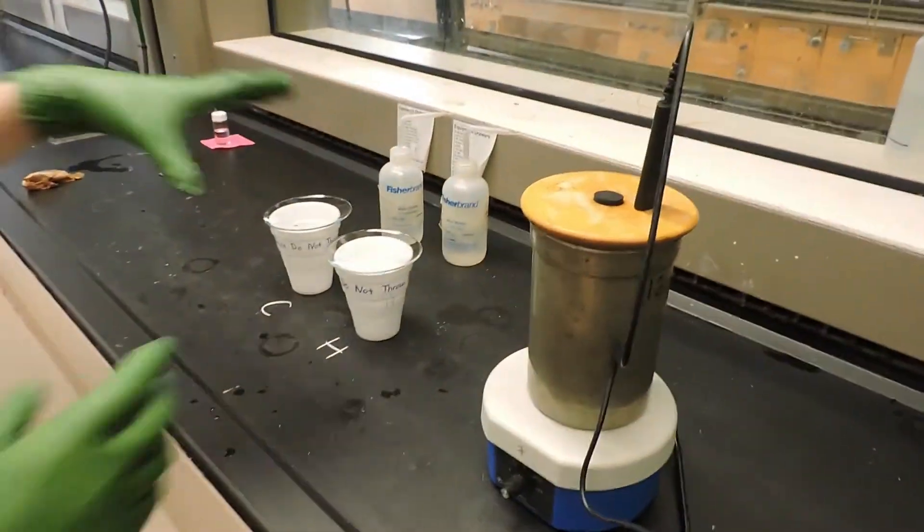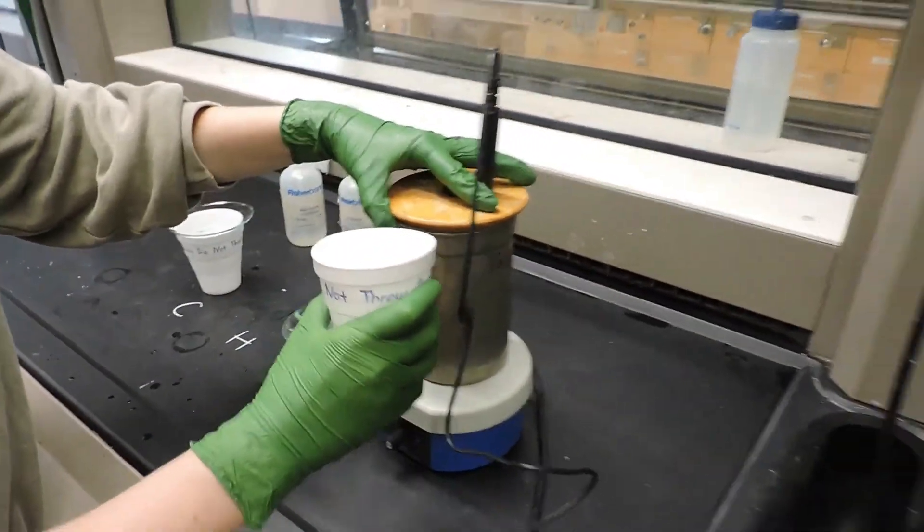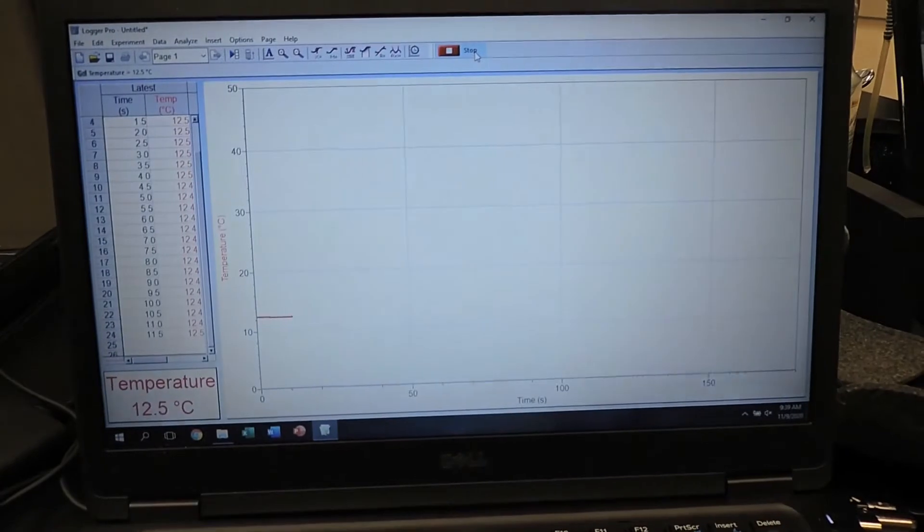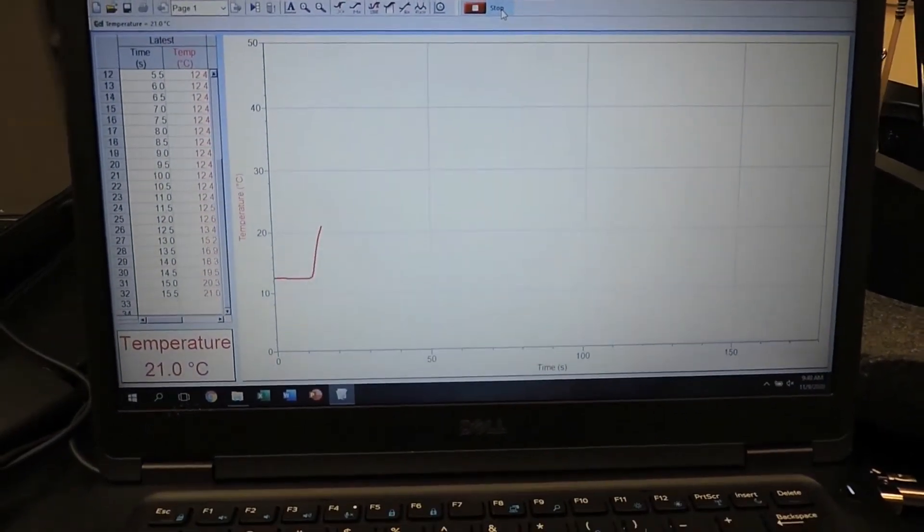We'll crack the lid of the calorimeter slightly to introduce the hot water. Here you can see we are collecting, and with the introduction of the hot water, you immediately see a spike in the graph.